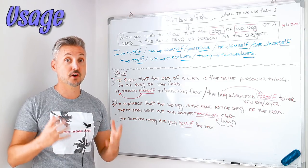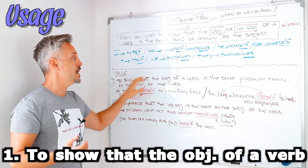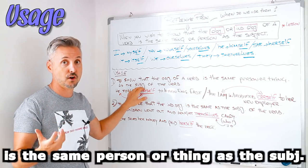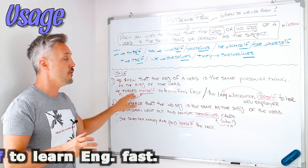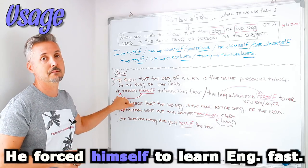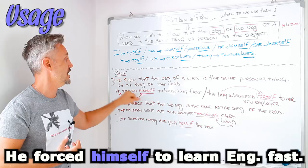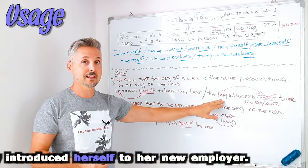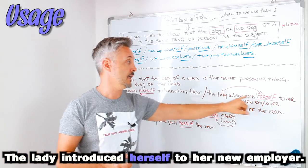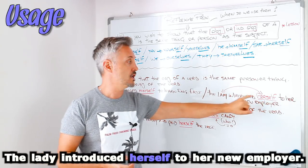So when do we use reflexive pronouns? Well, the first, most important point I already told you. I repeat it. To show that the object of a verb is the same person or thing as the subject of the verb. Like my example, he forced himself to learn English fast. Himself is the same as the subject of this verb, force. Another example, the lady introduced herself to her new employer. Herself is the lady. It's the same subject, right? The lady, herself. Introduce is the verb.